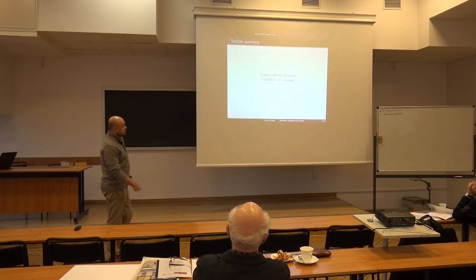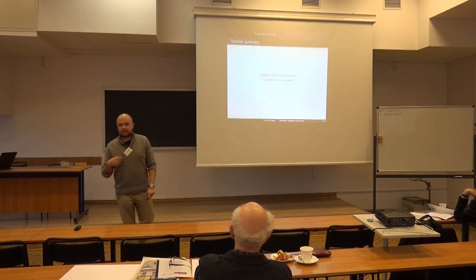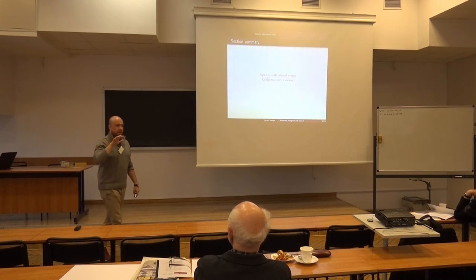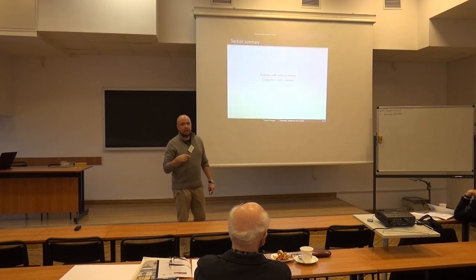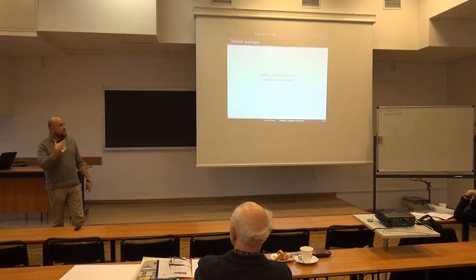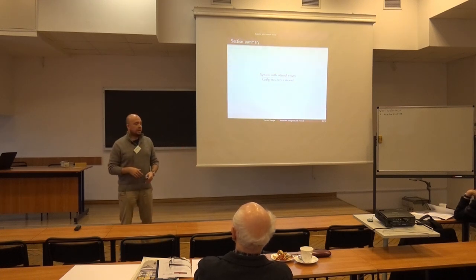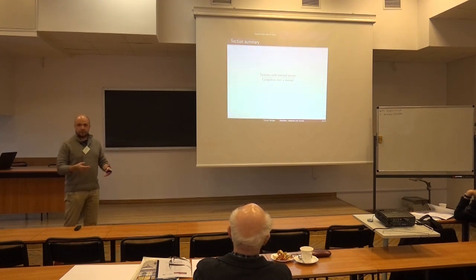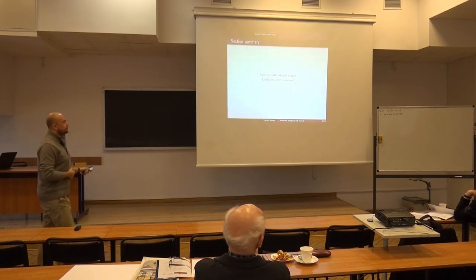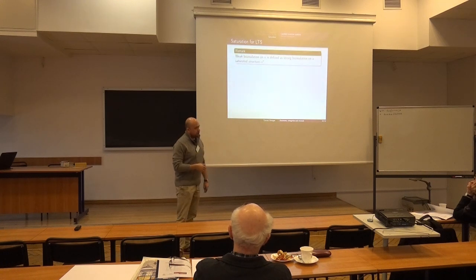Systems with internal moves can now be modeled as co-algebras over a monad. A co-algebra is a map from X to TX. If you consider it in the Kleisli category for T, you can compose it with different things. The gain from this observation is that systems — automata, probabilistic systems — can now be composed with one another, and you can use categorical constructions like different adjunctions in different categories to obtain new results.